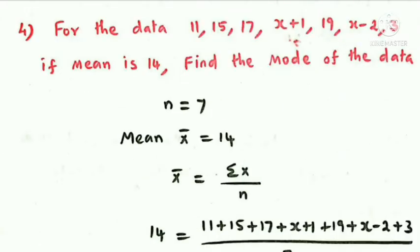Next question. For the data: 11, 15, 17, x+1, 19, x−2, 3, if the mean is 14, find the mode of the data. The number of data n = 7.